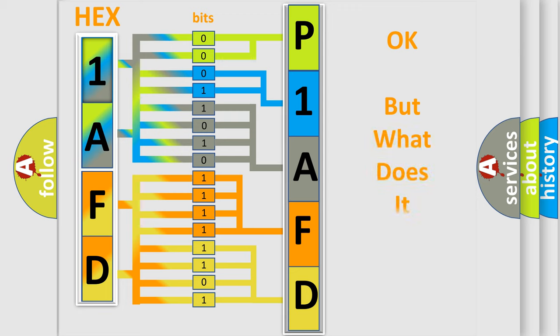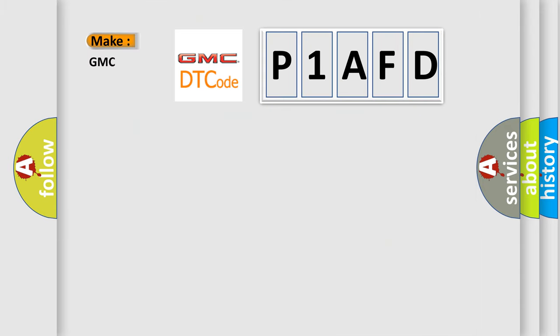The number itself does not make sense to us if we cannot assign information about what it actually expresses. So, what does the Diagnostic Trouble Code P1AFD interpret specifically for GMC car manufacturers?